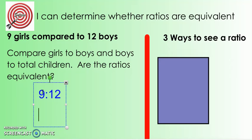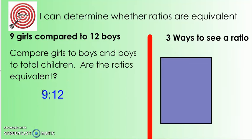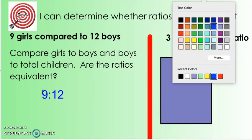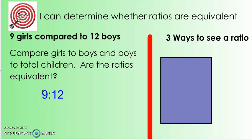Exactly, 9 to 12. And then if I want to compare boys to the total number of children, I can actually write the ratio as a fraction because I'm comparing an amount. We want boys out of the total amount, which is 21, because if I add 9 plus 12, I get 21. And so we have 12 out of 21 total children.